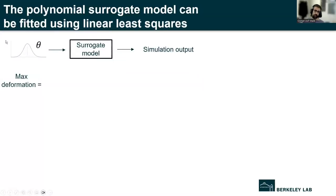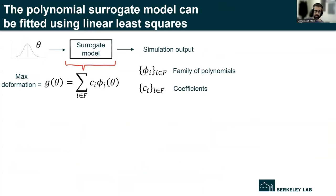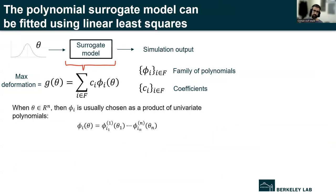And there's many forms the surrogate model could take. These days, it's popular to use neural networks and machine learning techniques, for example. In this particular work, we consider something maybe a little bit more traditional in the form of a polynomial model. So we suppose that the surrogate model, which takes an input theta, takes the form of a linear combination of polynomials. So phi_i here is a polynomial, and we have a family of polynomials. And in particular, these polynomials are assumed to be products of univariate polynomials. And these univariate polynomials could be something like Legendre polynomials, Laguerre polynomials, or another similar basis that is suitable for the problem that you're considering. And the c_i's are then coefficients that determine how much of each of these polynomials we use in the model.